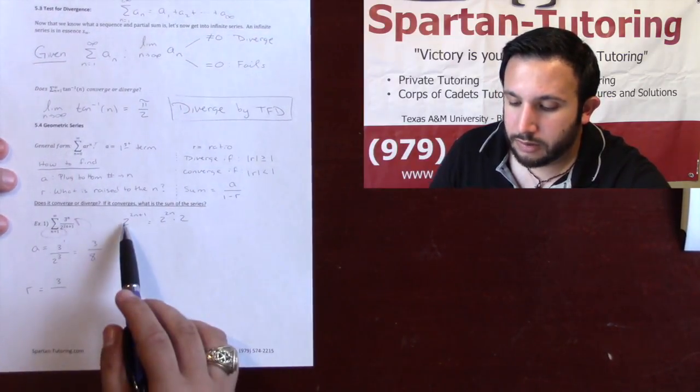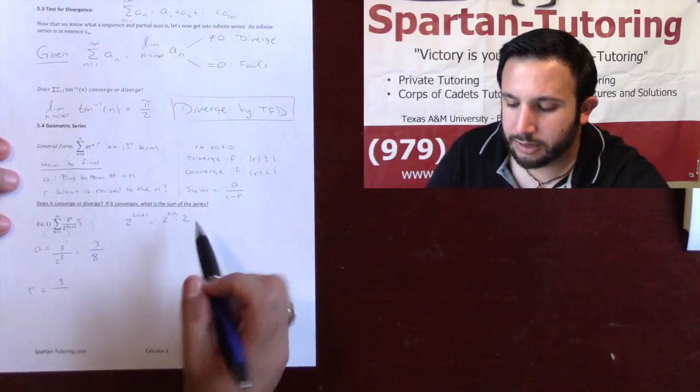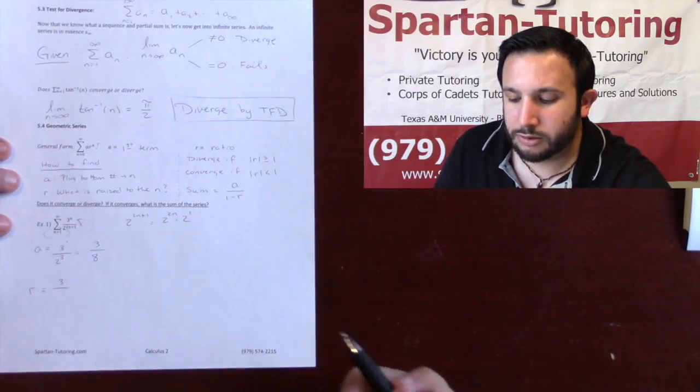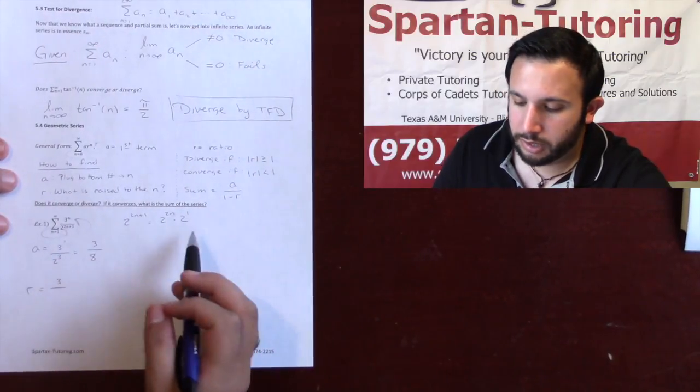Likewise over here. If you have 2 to the 2n plus 1, that's 2 to the 2n times 2 to the 1. And if it makes you feel better, 2 to the 1. Okay. So that's cool.